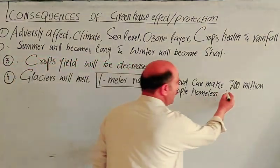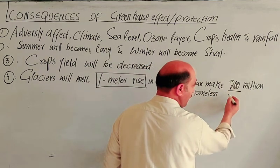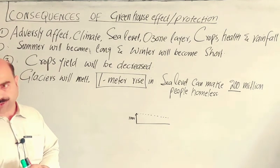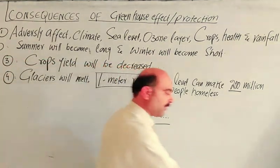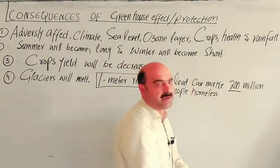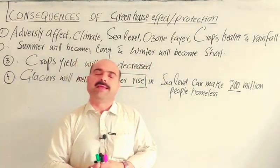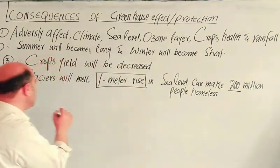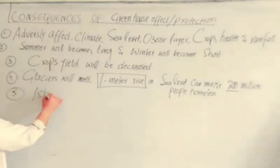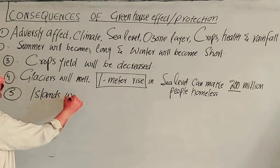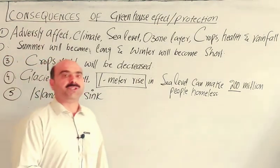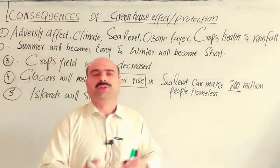If the sea level rises by one meter, around 200 million people will be affected. Furthermore, many islands — small islands — will sink beneath the water. These islands will be submerged as a direct consequence of sea level rise caused by the greenhouse effect.